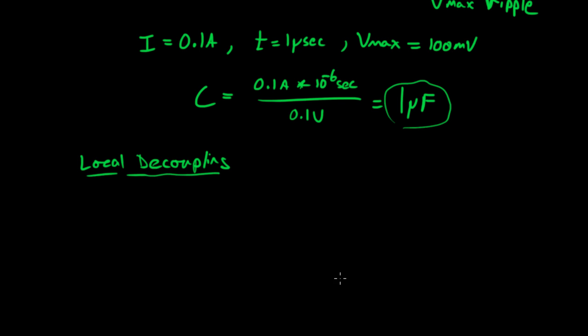I'll just write down some guidelines here. For local decoupling, if you're operating at 25 MHz or below, the 0.1 microfarad capacitance near your IC is fine.